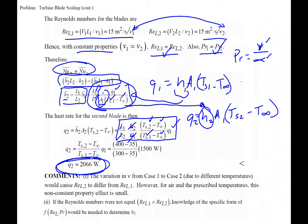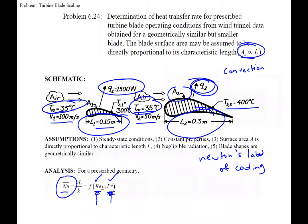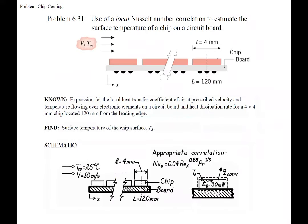One important caution: this approach worked because the Reynolds numbers and Prandtl numbers happened to be the same between the two experiments. If they were different, we would need to know the actual functional form of the Nusselt number correlation — whether it's a polynomial, exponential, or power law — to properly account for how the Nusselt number changes between the two conditions.